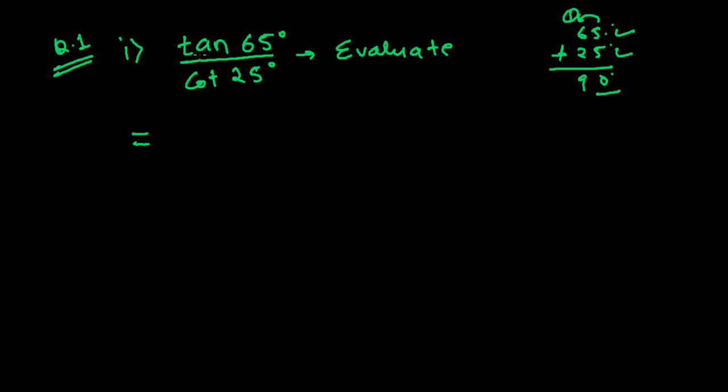First step is we have to make the trigonometric ratios the same. If this is tan, then you must make this also tan. Or if this is cot, you have to make this cot. You can choose either, but I'm making this cot as a tan. So I'm keeping tan 65° as it is.